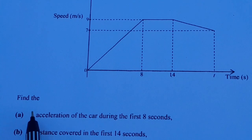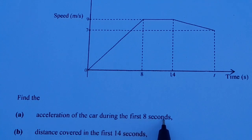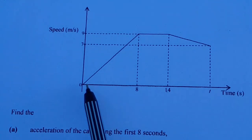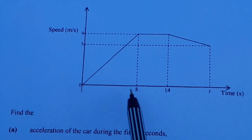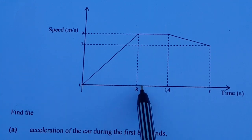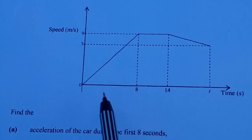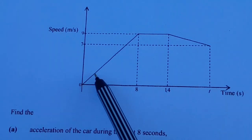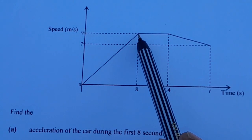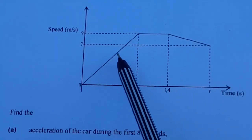The first question says: find the acceleration of the car during the first 8 seconds. The 8 seconds are here, and when you see a steep line going up like this, this means that this is the acceleration.